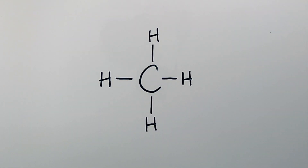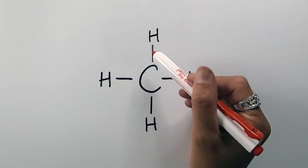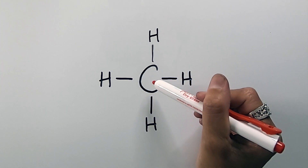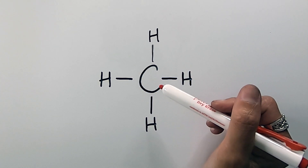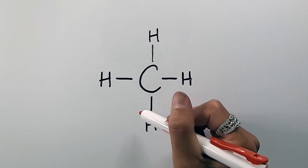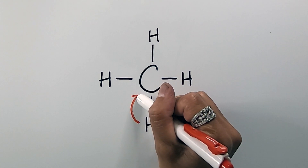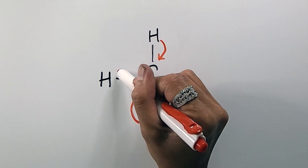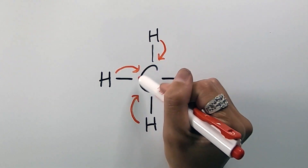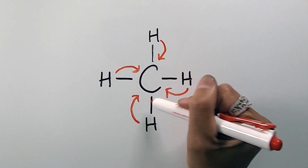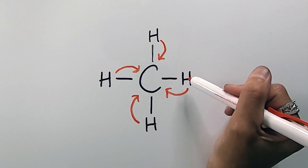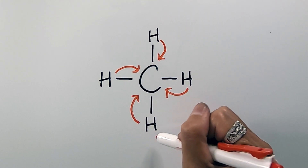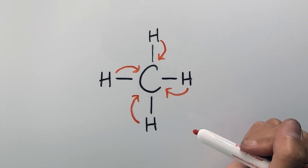So let's look at this example. We have carbon bonded to four hydrogens. Carbon is more electronegative than the hydrogens, so carbon will create inductive effects and act as an electron withdrawing group, shifting the hydrogen's electron cloud density toward itself. So carbon becomes more shielded or protected by electron cloud density, whereas the hydrogens become deshielded or less protected by their electron cloud density.